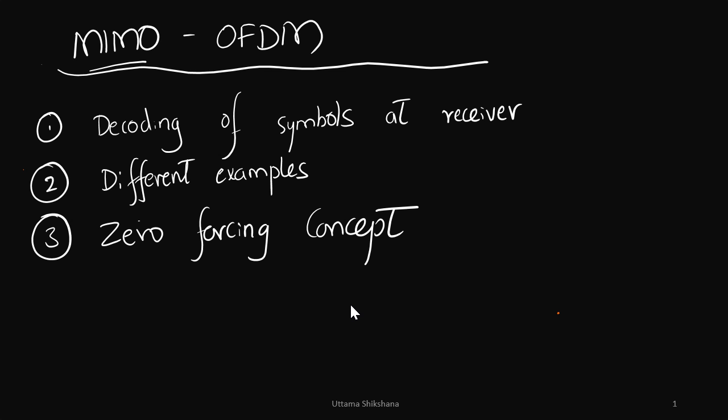Hello, my dear friends, welcome back to the channel. This is the series related to MIMO OFDM — this is the third part. In this part I am going to talk about the decoding of symbols at the receiver, but this time with a different example. Earlier I had taken a very simple example, but with a different example we will try to see what different strategy we need to apply at the receiver in order to get back the symbols independently.